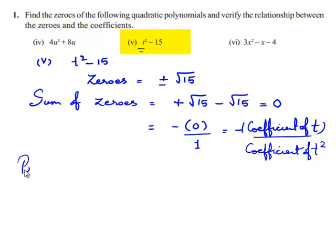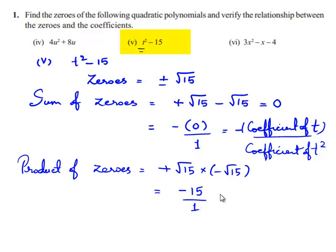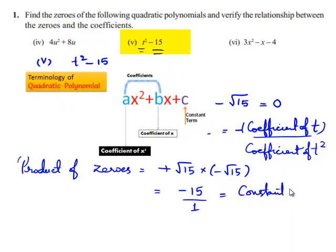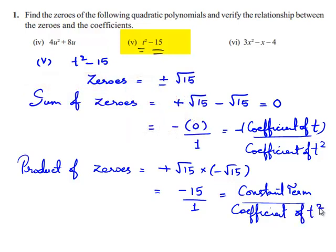Now for the product of zeros: (√15) × (-√15) = -15. This can be written as -15/1. If you observe, -15 is the constant term and 1 is the coefficient of t². So the product of the zeros equals the constant term divided by the coefficient of t².